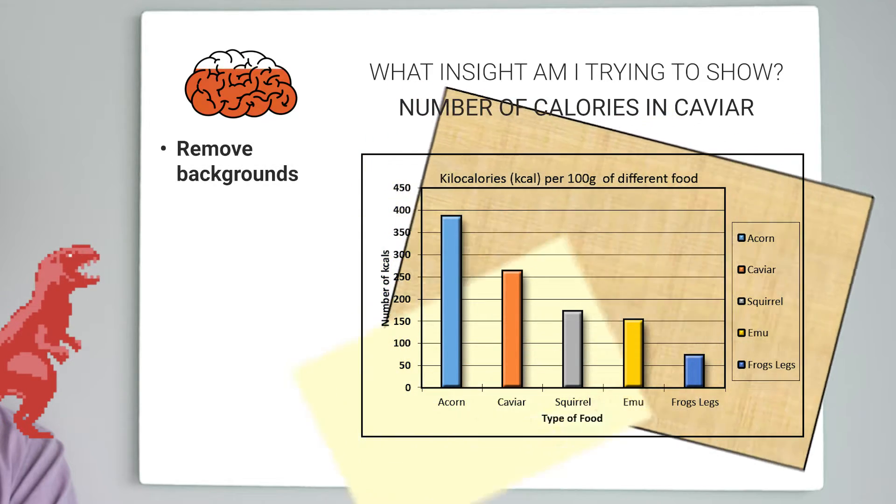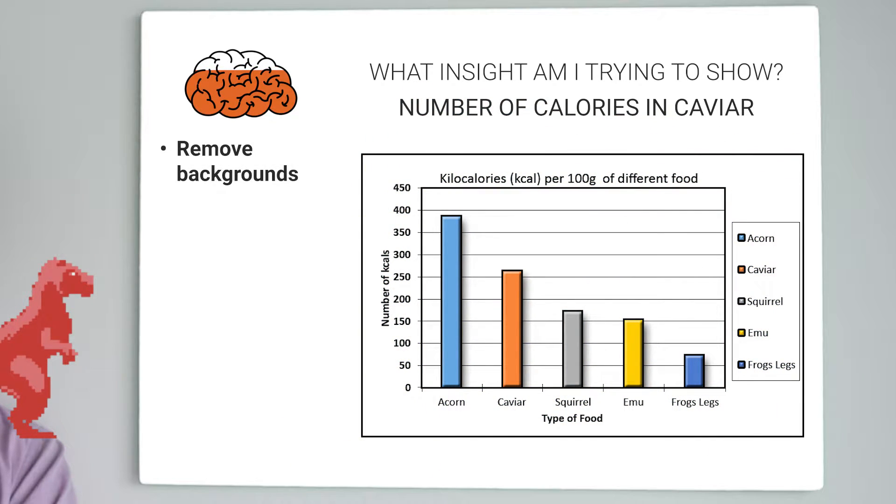First off, let's remove the backgrounds as they're not adding anything. Then let's get rid of the redundant labels as they're not helpful. Clear out the borders.